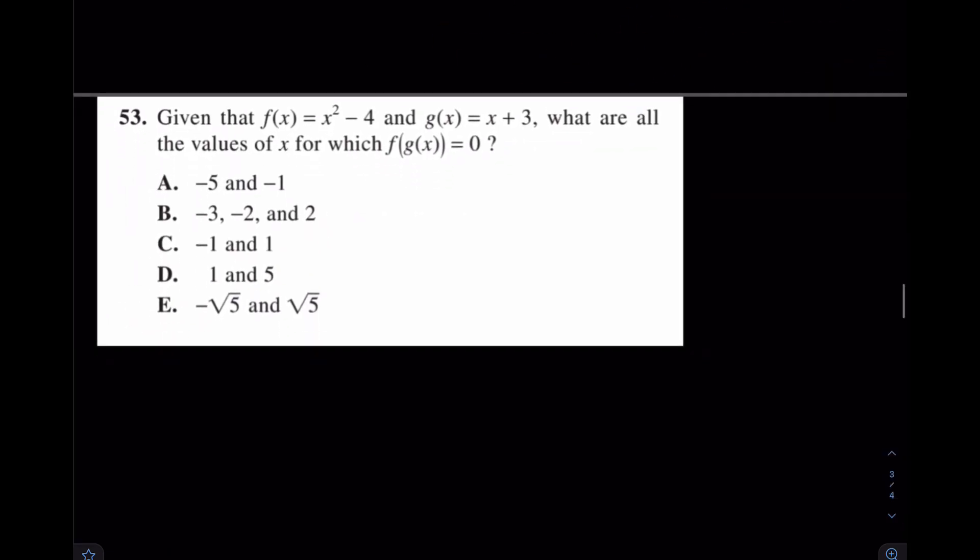This is number 53 from an ACT. What it's saying here is plug G of X into F and that should equal zero. So that's what we'll do. We're plugging G of X into F and setting that equal to zero. So I have X plus 3 squared minus 4, and I'm setting that equal to zero.